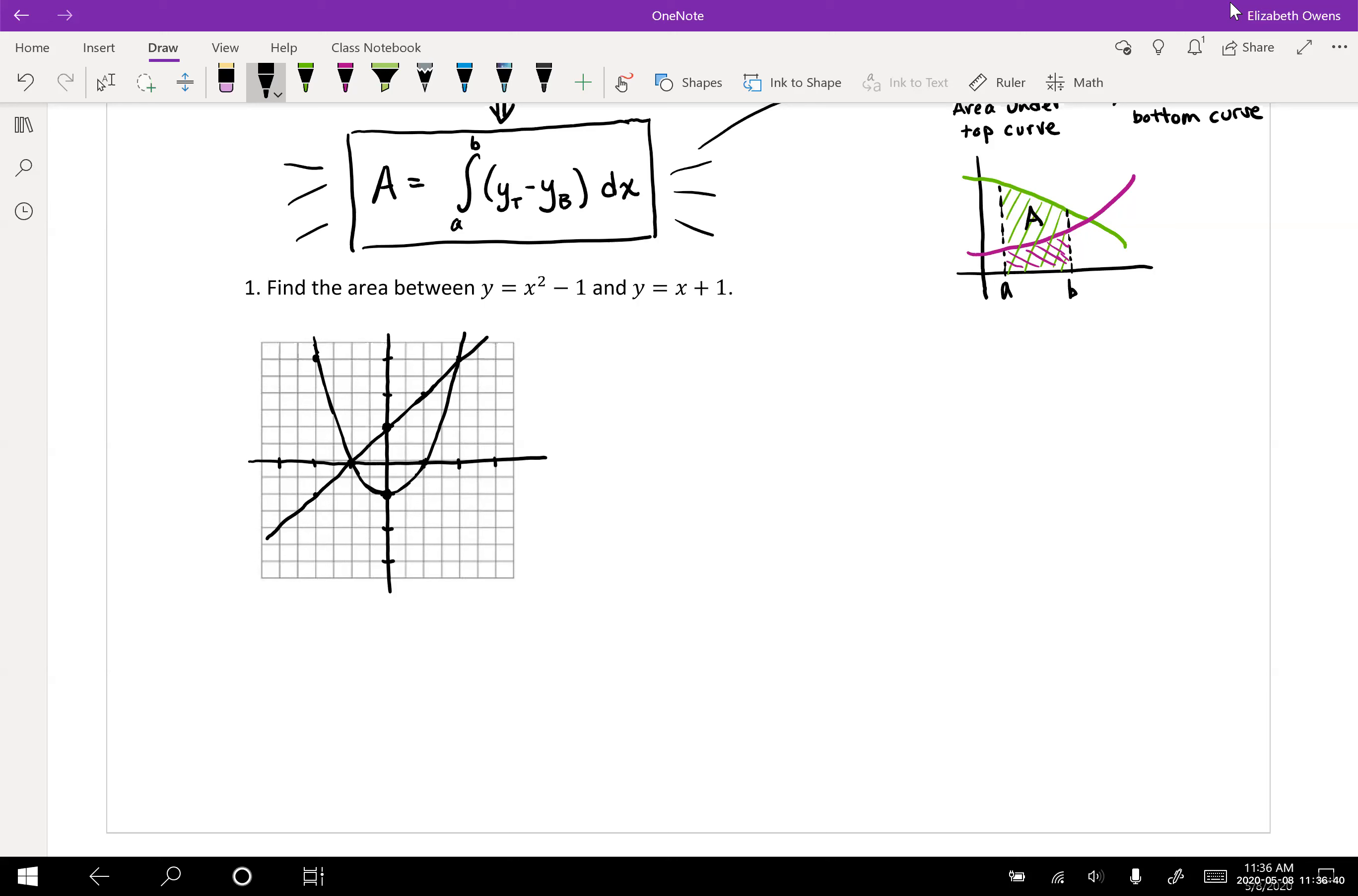Now that we've drawn the picture, we can actually see why they didn't specify an interval necessarily here. There is actually an area that is enclosed between those two curves. It's trapped between them. It's this area right in here. That's the area that we're going to be looking for.